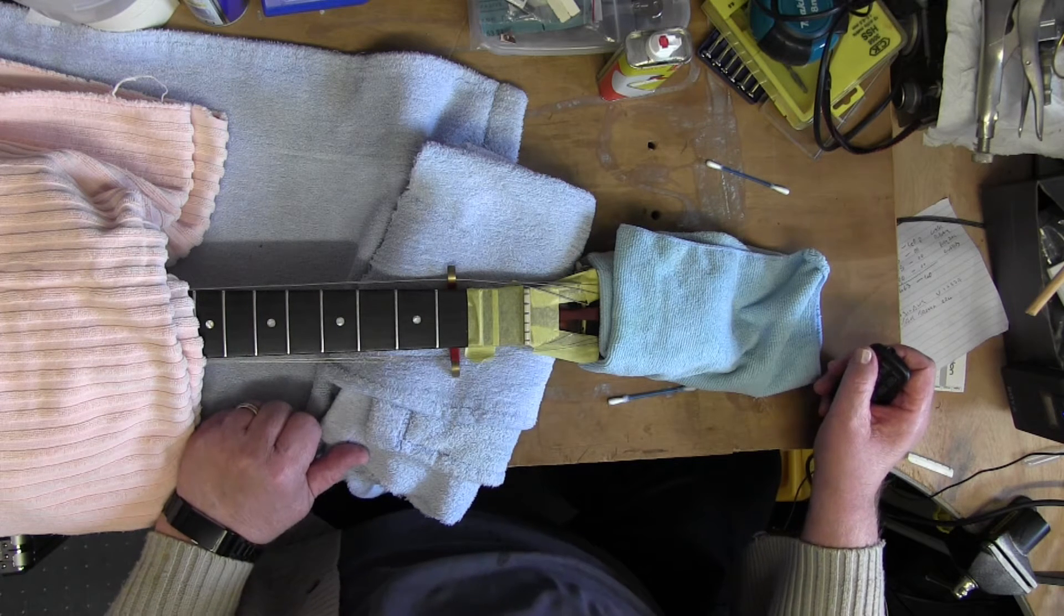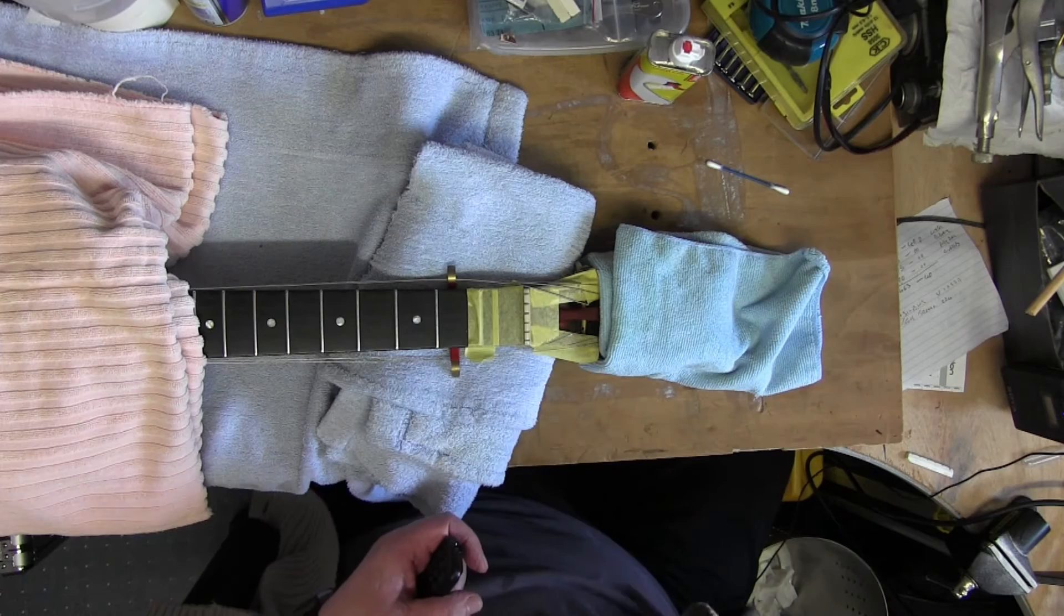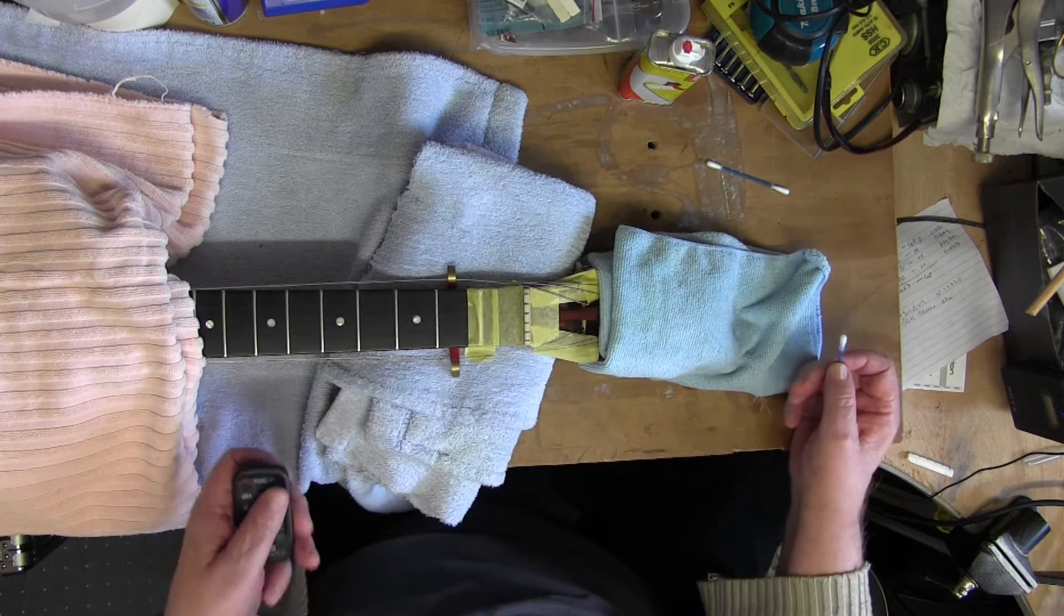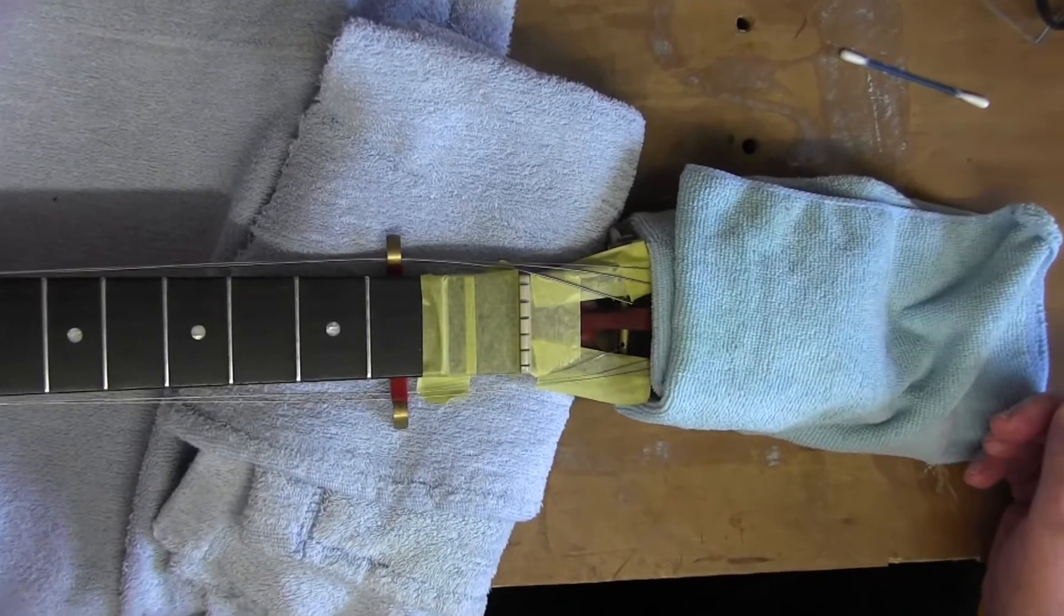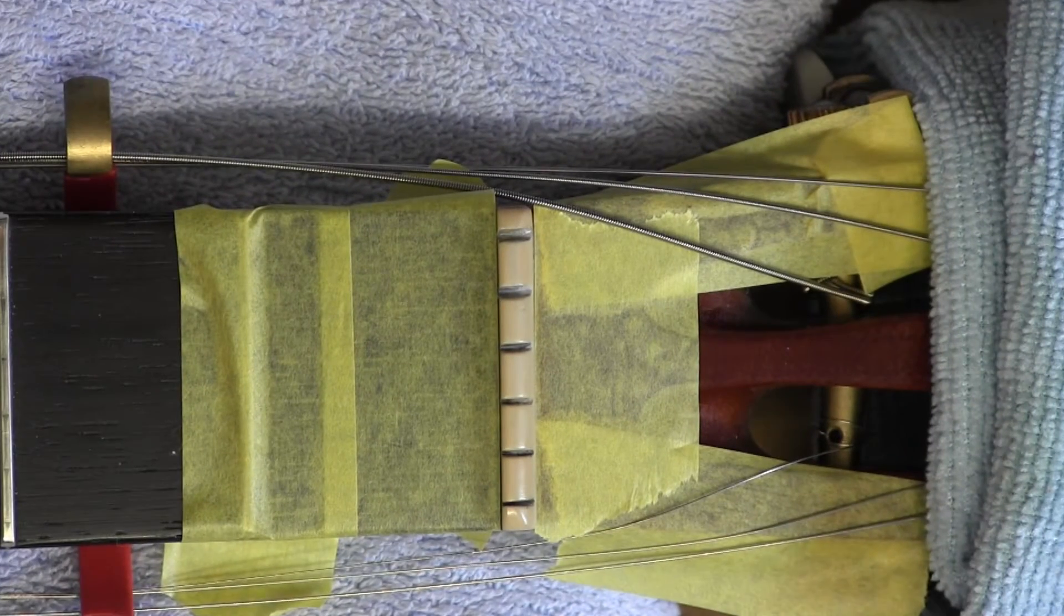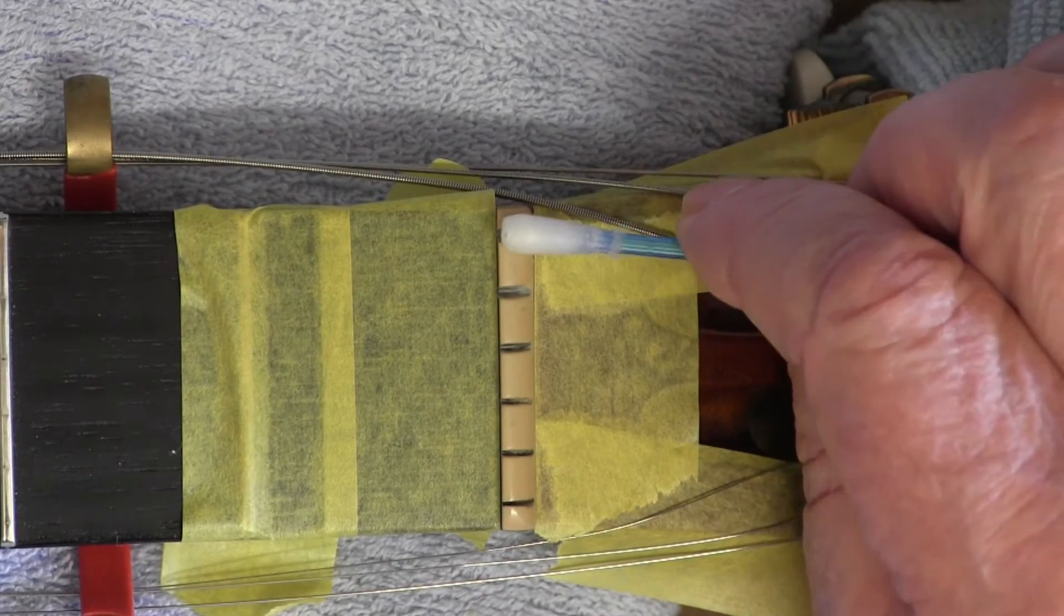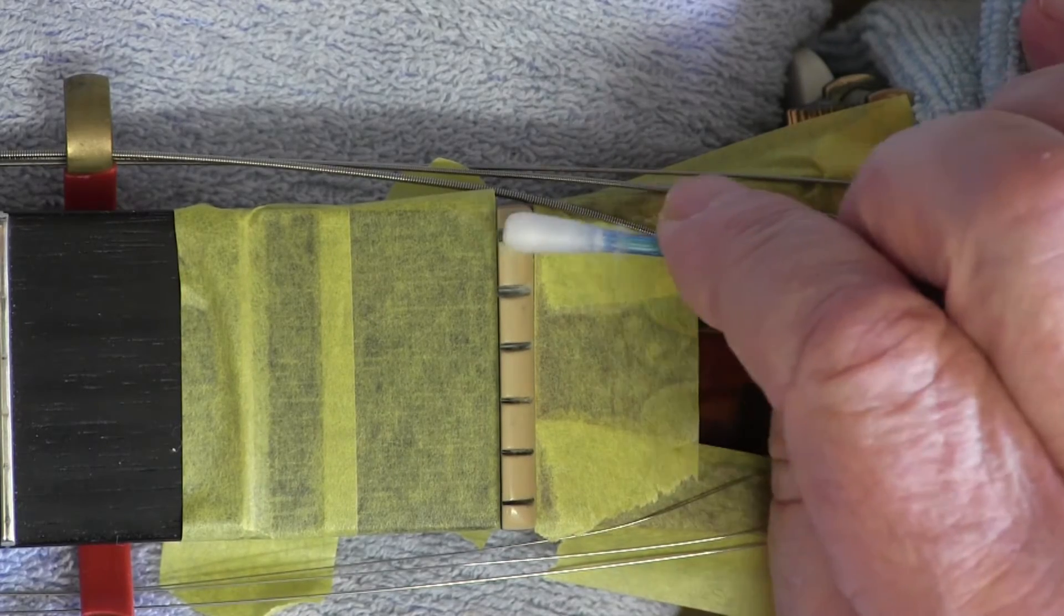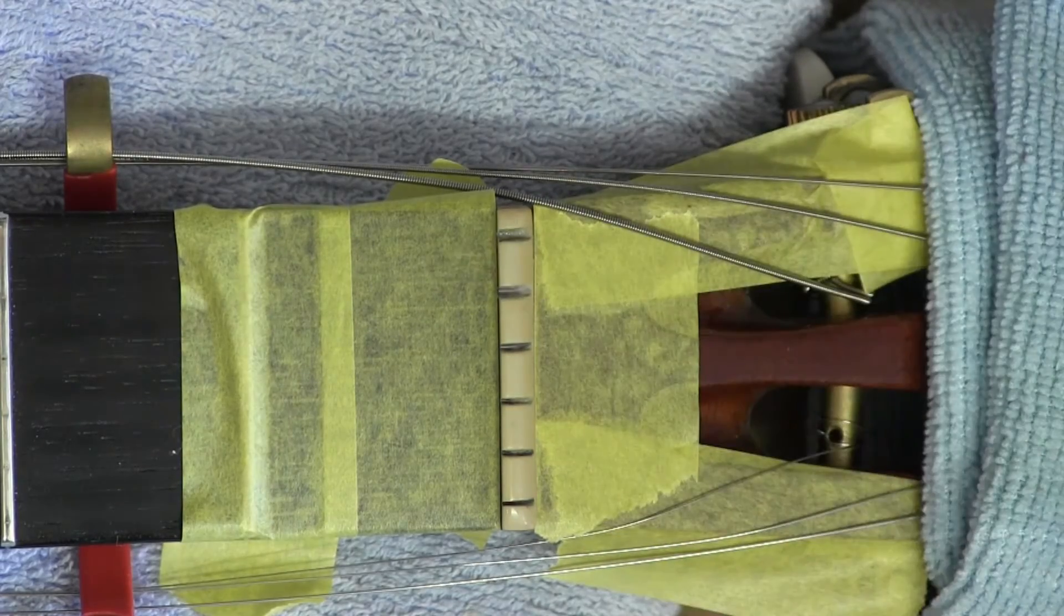The first thing to do really is to get some naphtha, lighter fluid basically, and get what appears to be graphite. Let's get in a bit closer so that anybody who's watching this can see what's happening. There we go. The miracles of modern science. Because there's what looks like graphite on this. I'm going to degrease it.